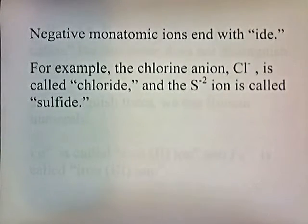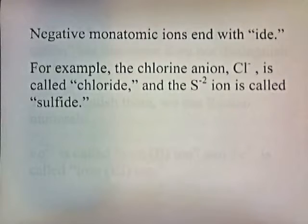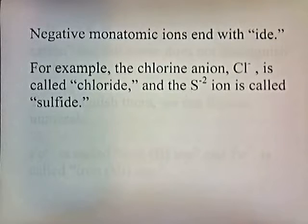Negative monatomic ions end with -ide. For example, the chlorine anion, Cl-, is called chloride, and the S2- ion, the sulfur ion, is called sulfide.